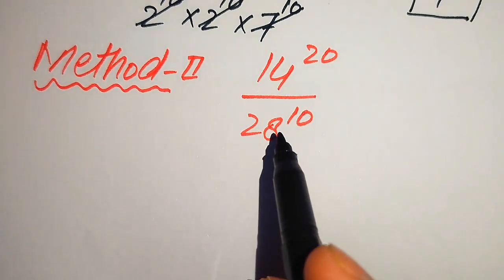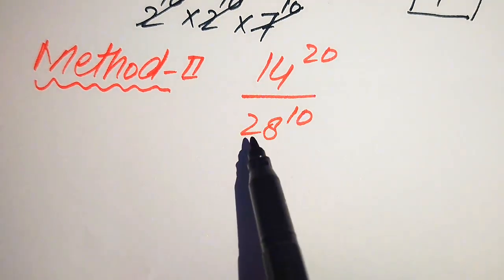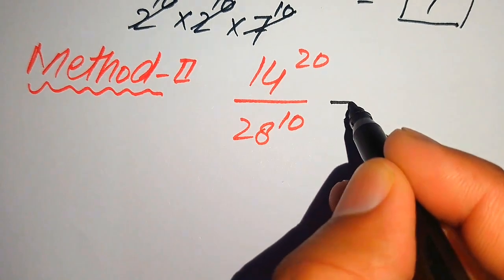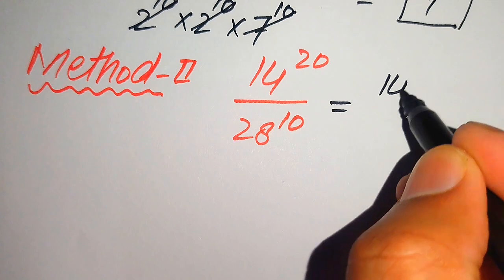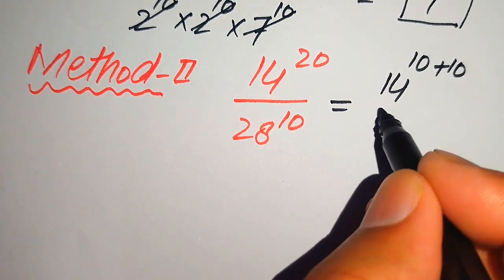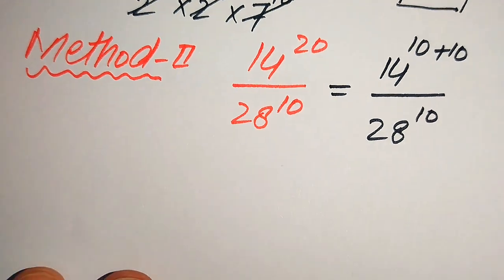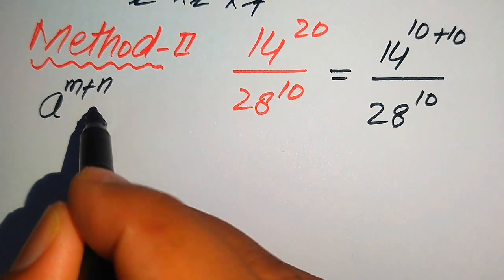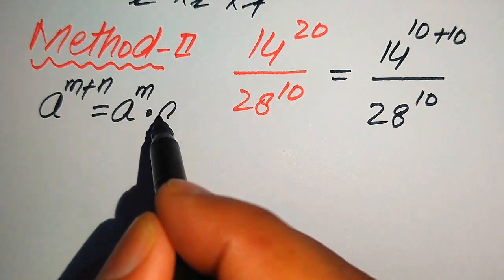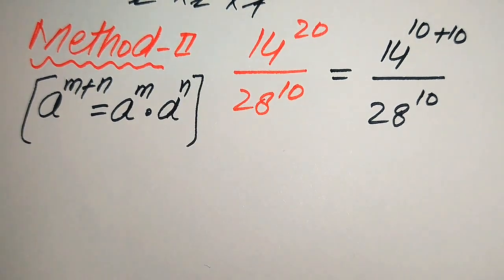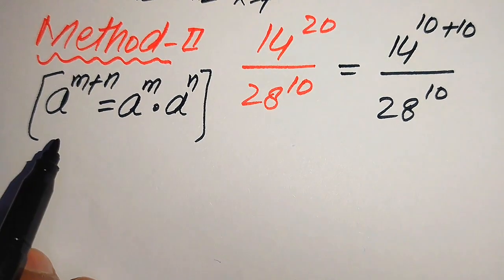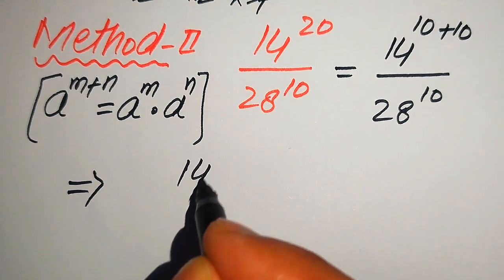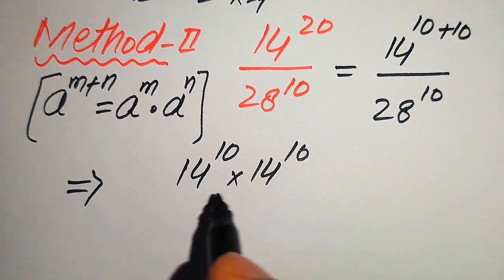In the second method, instead of breaking the bases, we break the exponents. We write 14^20 as 14^(10+10), divided by 28^10. Using the exponent law a^(m+n) = a^m × a^n, we expand the numerator to 14^10 × 14^10, divided by 28^10.